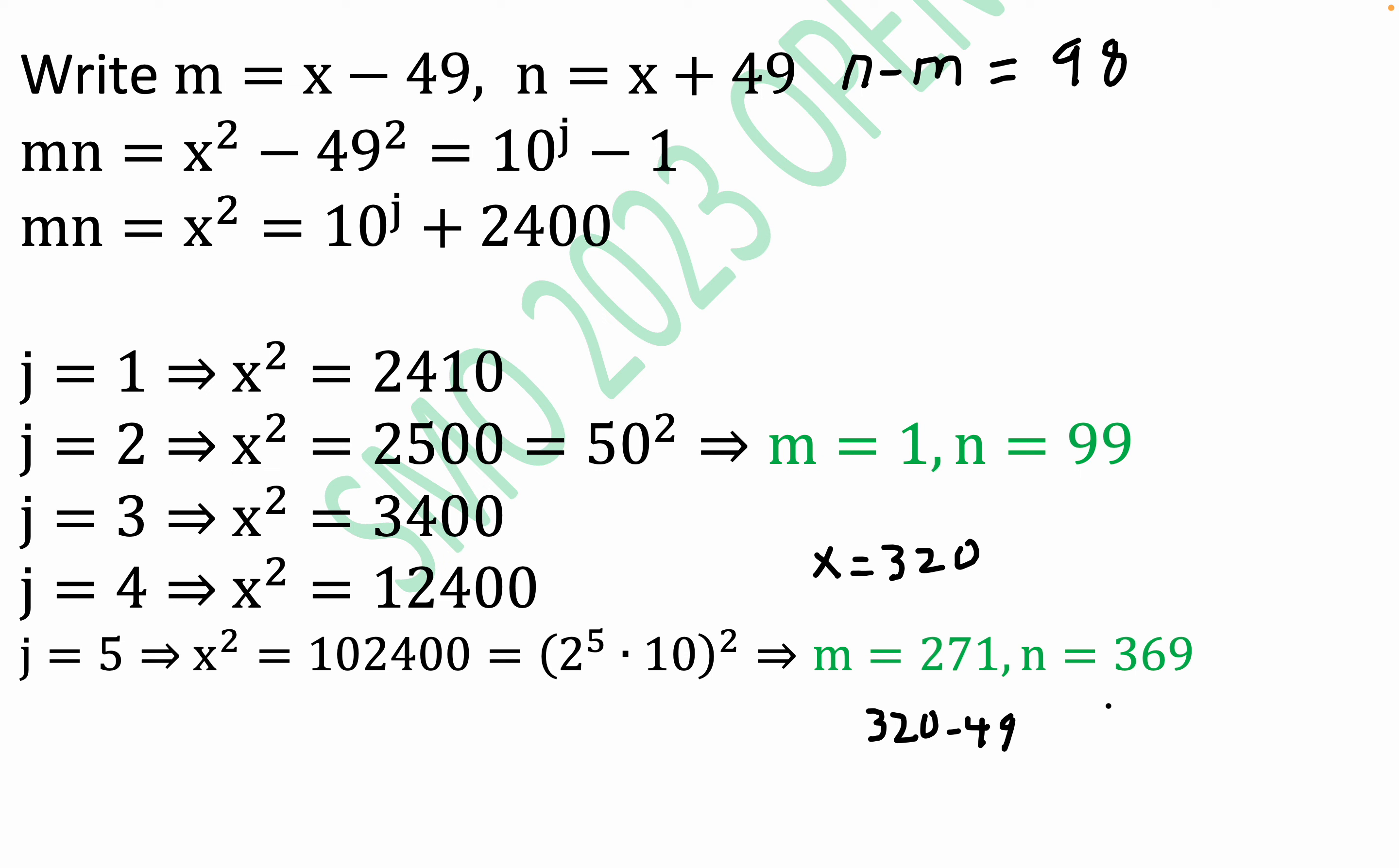And then this piece right here, of course, is 320 plus 49. So we have found another instance of this happening, and it's going to be a five-digit number.